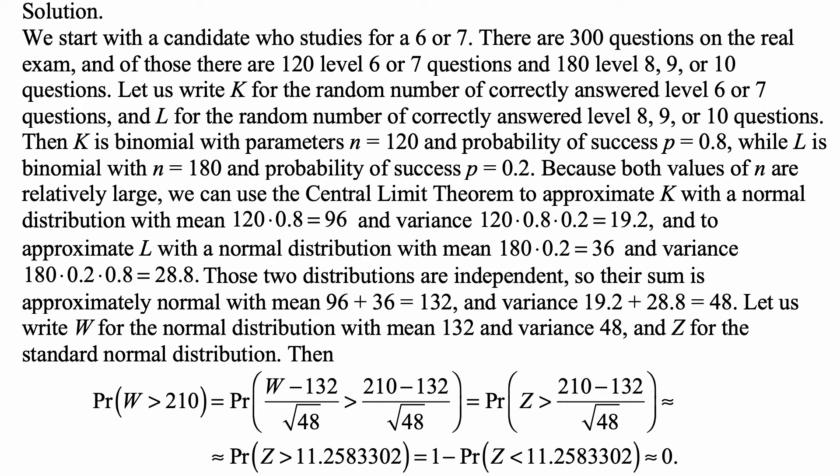So here's the solution. We start with a candidate who studies for a 6 or 7. There are 300 questions on the real exam, and of those, there are 120 level 6 or 7 questions and 180 level 8, 9, or 10 questions. Let us write K for the random number of correctly answered level 6 or 7 questions and L for the random number of correctly answered level 8, 9, or 10 questions. Then K is binomial with parameters n = 120 and probability of success p = 0.8, while L is binomial with n = 180 and probability of success p = 0.2.